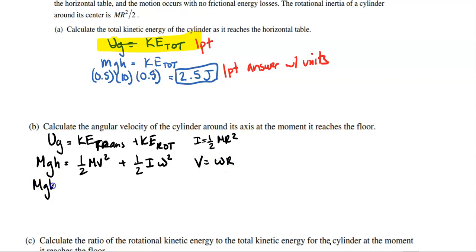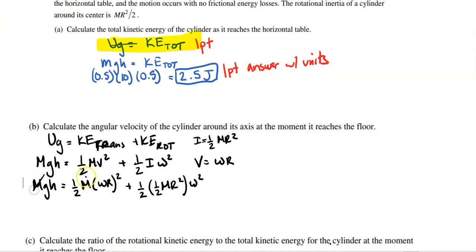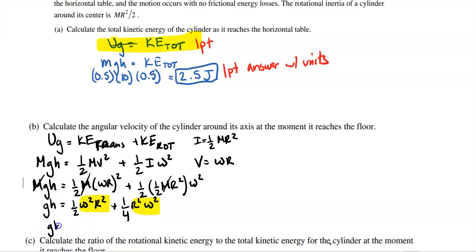Plugging in: mgh equals ½m(ωr)² plus ½ · (½mr²) · ω². Mass cancels from every term. Distributing gives: gh equals ½ω²r² plus ¼r²ω². Adding those fractions — ½ plus ¼ equals ¾ — so gh equals ¾ω²r².